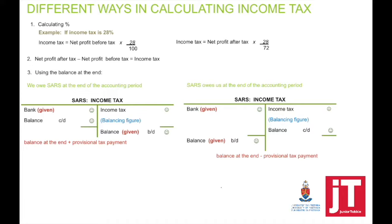But as soon as they provide you with the net profit after tax, I can't just take the amount and times it by 28%. Your net profit before tax is always equal to 100%. Minus income tax at 28% equals the net profit after tax, which will be 72%. So if I want to calculate the income tax, I'm going to take 28 divided by 72.